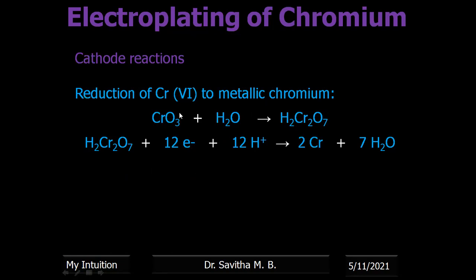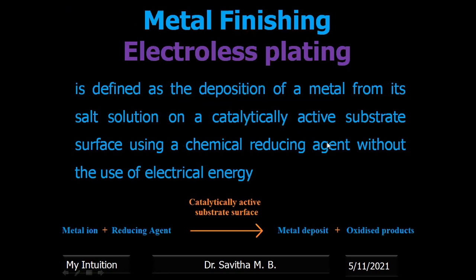At the cathode, Cr⁶⁺ is reduced to metallic chromium. The product of the anode reaction reacts with water at the cathode region to form chromic acid. The oxidation state is still +6. For two chromium atoms, +12 total means 12 electrons are required for reduction, and chromium gets deposited. This is the electroplating of chromium.